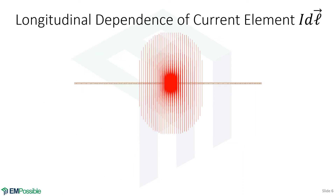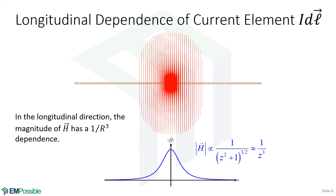There's also a longitudinal dependence. This is a side view of the wire with current flowing along it, and we're looking at a differential current element right in the center. There's a decay in magnetic field intensity with distance along the wire, and it decays the same in both directions. It turns out this has a 1/z³ dependence — so it drops as distance cubed as we move away from the differential current element. Unlike the radial direction where r equals zero gives infinite magnetic field, when z equals zero here we don't get an infinite magnetic field, but we do get a maximum.